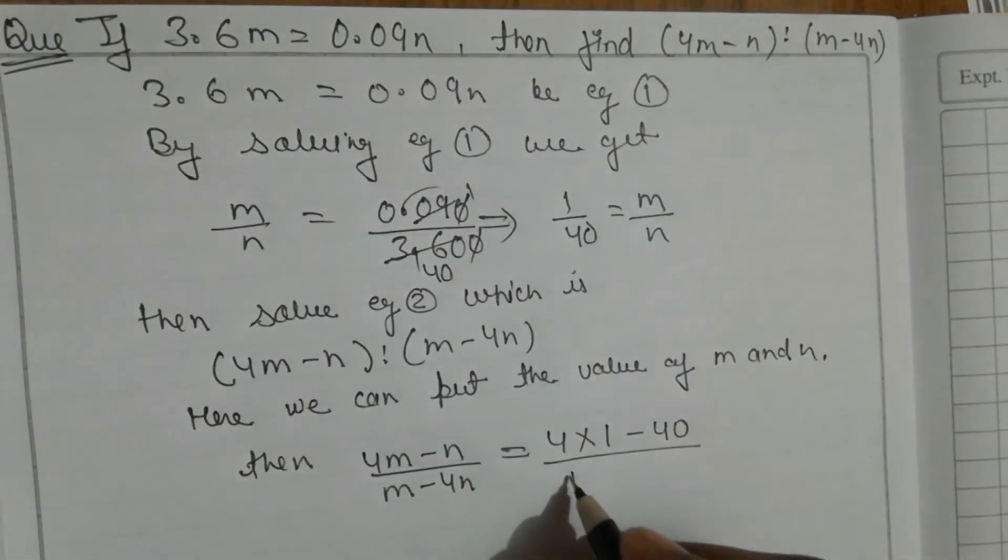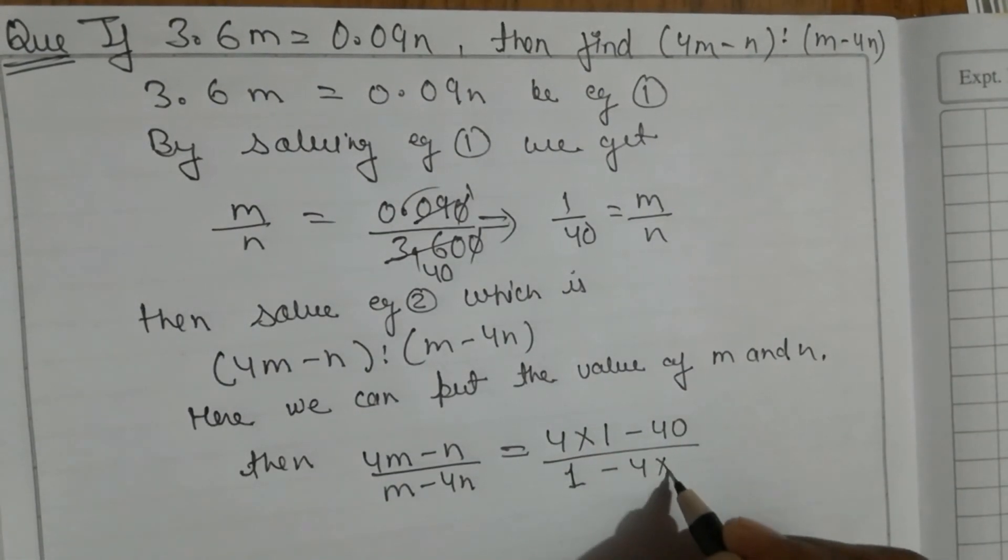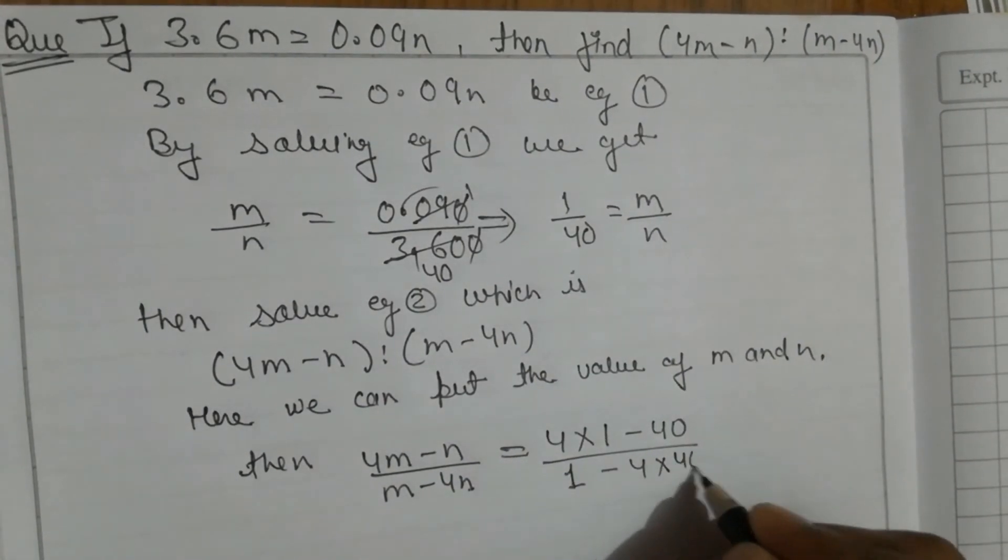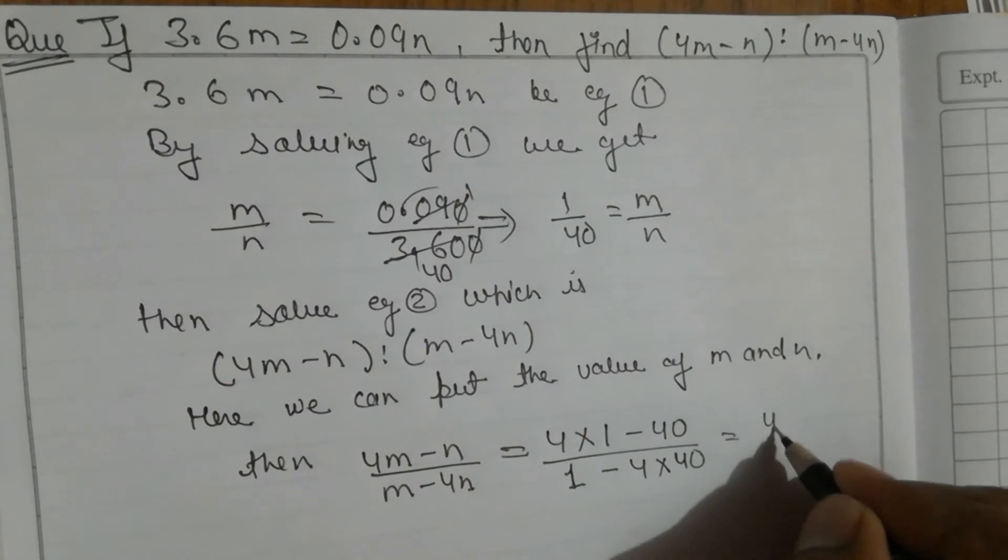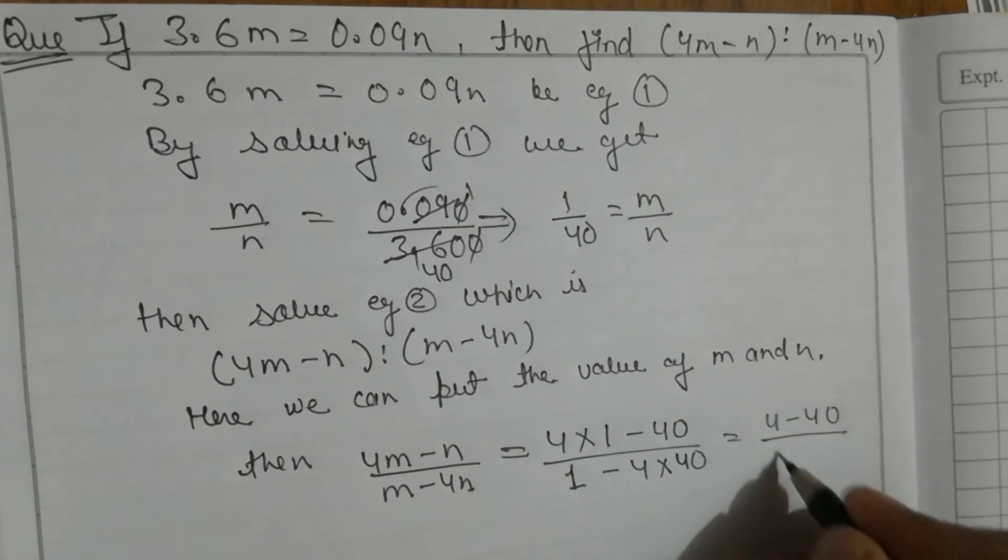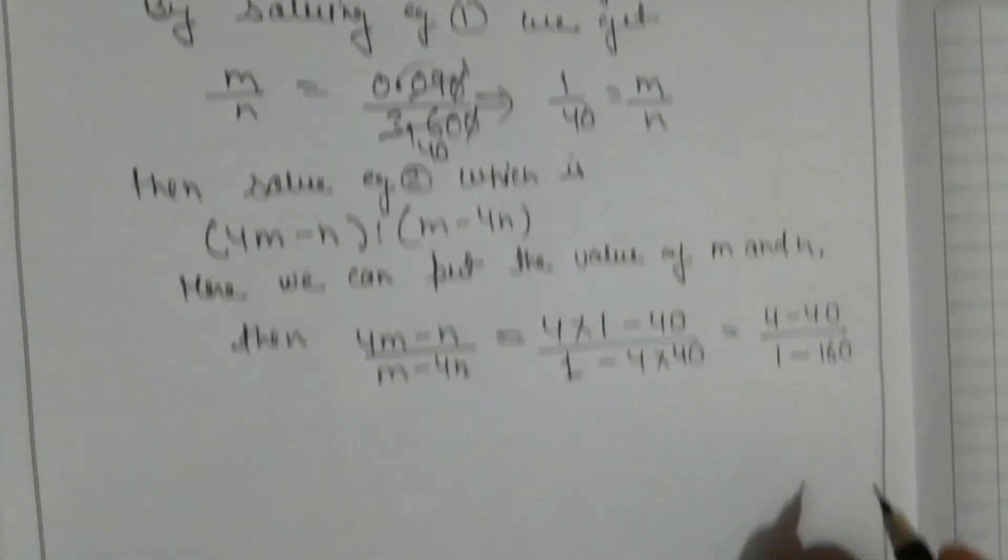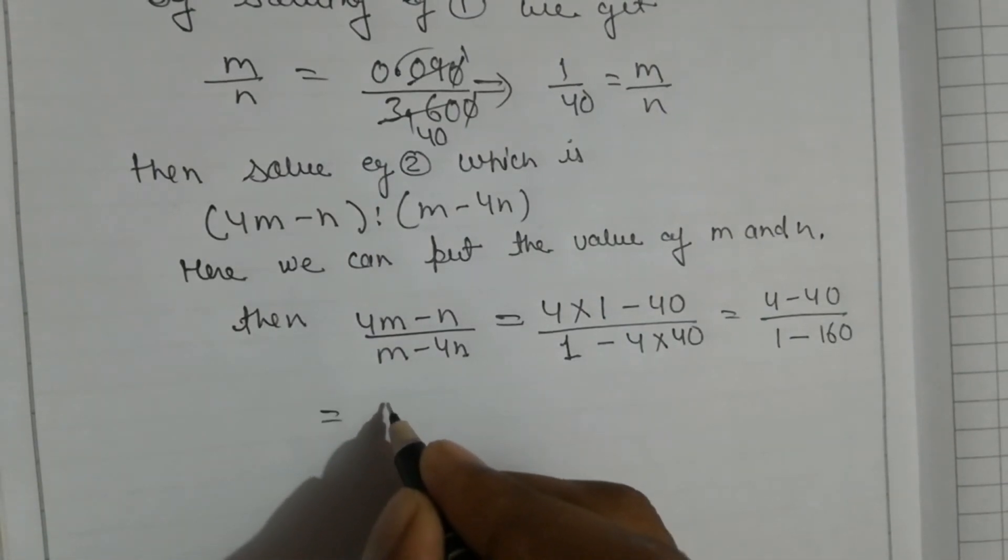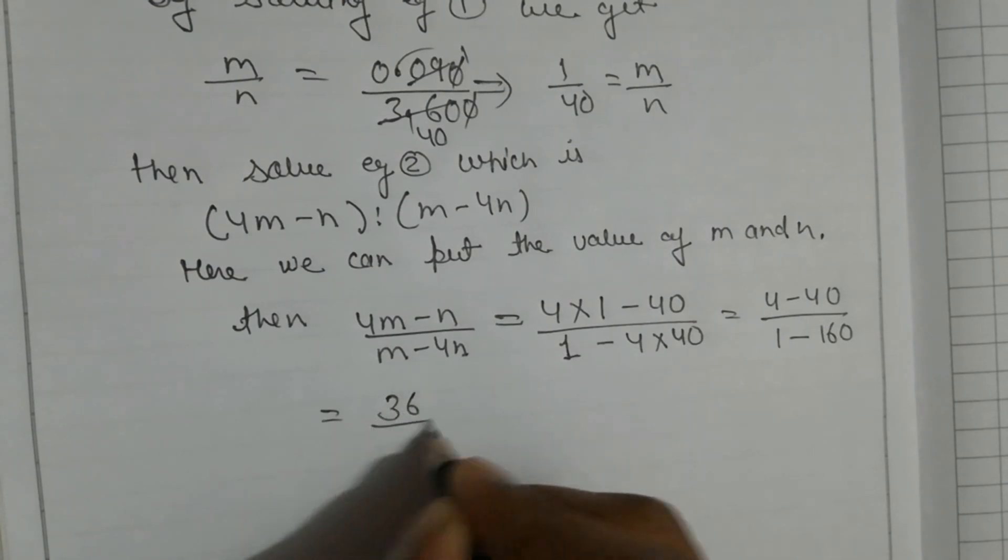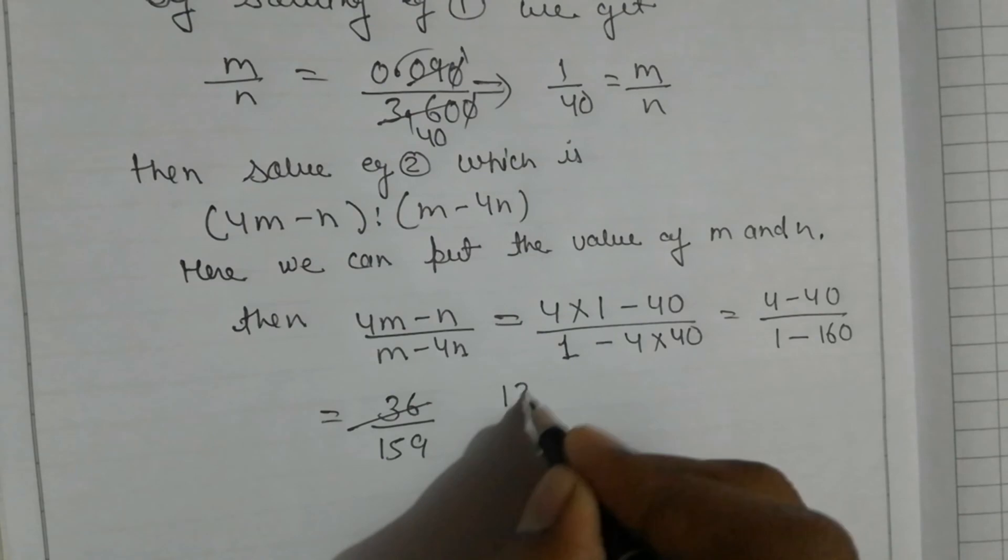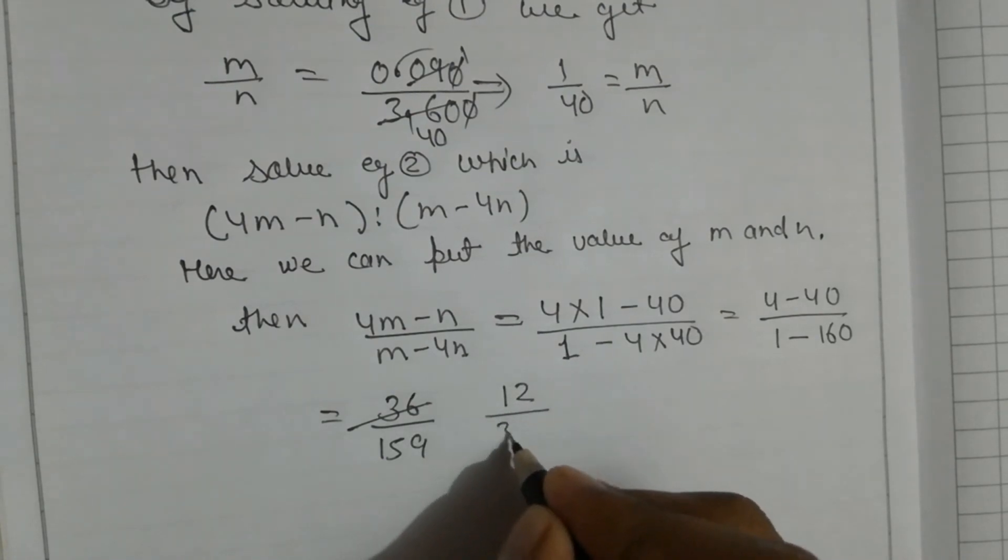1 minus 4 times 40. Then 4 minus 40 over 1 minus 160. We can write -36 over -159, which we can further divide by 3.